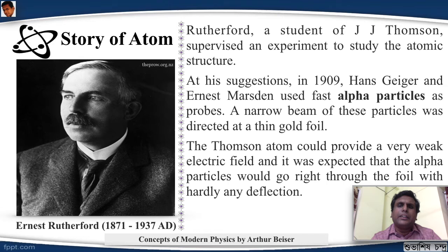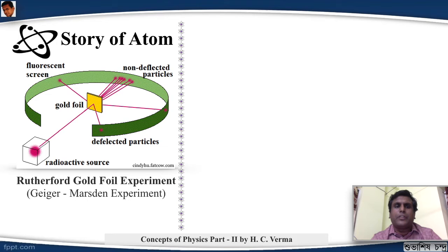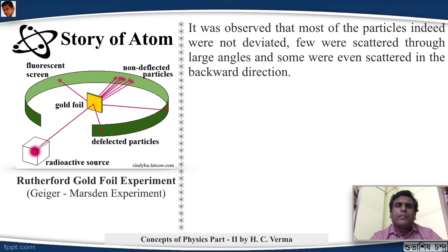This is the Geiger-Marsden experiment, or the Rutherford gold foil experiment as it is popularly known. A radioactive source was emitting the alpha particles and a gold foil was kept in the path, and a fluorescent screen was placed in front of it in a circular fashion so that wherever the particles will be hitting, they will measure it. So it was observed that most of the particles were actually not deviated as it was thought of, few were scattered through large angles, and some were even scattered in the backward direction.